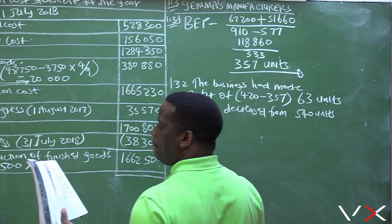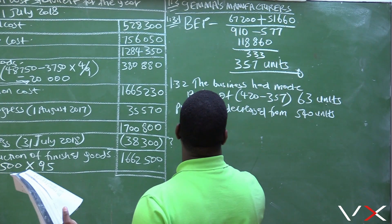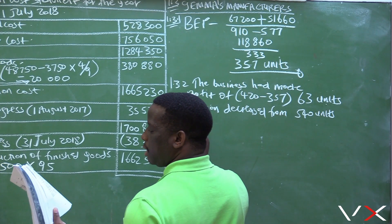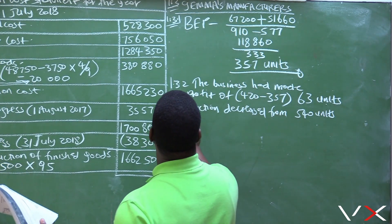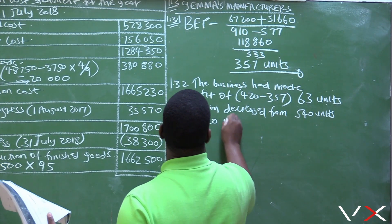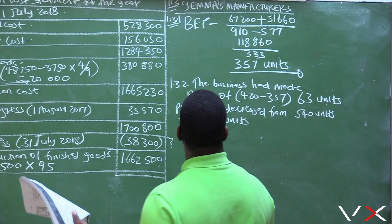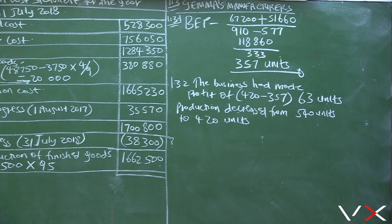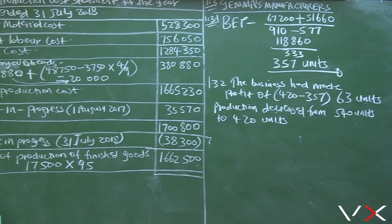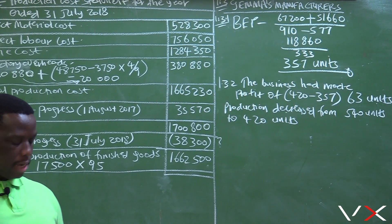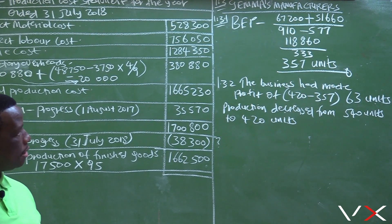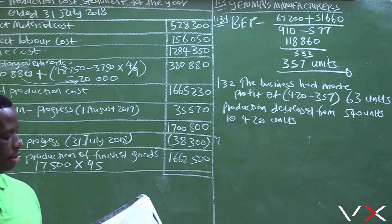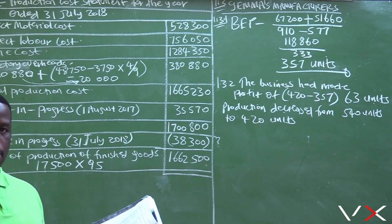Production decreased from 540 units to 420 units. So even though the business has made a profit considering the break-even point, we are also concerned that production has decreased from 540 units to 420 units.